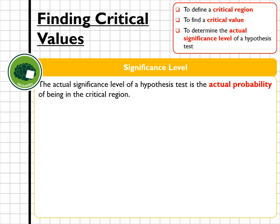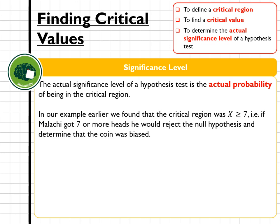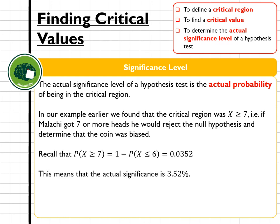The actual significance level of a hypothesis test is the actual probability of being in that critical region. What I mean by that is if we think back to that first example, we found that the critical region was x being bigger or equal to seven, i.e. we were looking for seven or more heads to reject the null hypothesis and determine that the coin was biased. The probability of being equal to or bigger than seven was 0.0352, which means then that our actual significance for this test was actually 3.52%. A reminder, if you're working with a two-tailed test you need to add the probabilities of the two tails together.